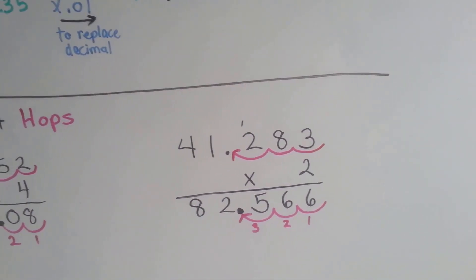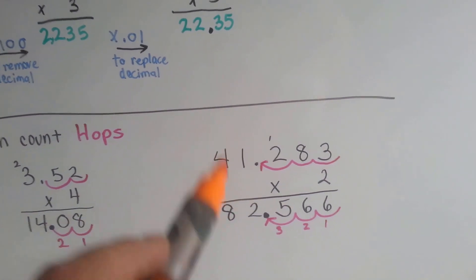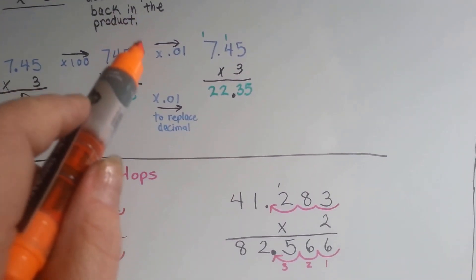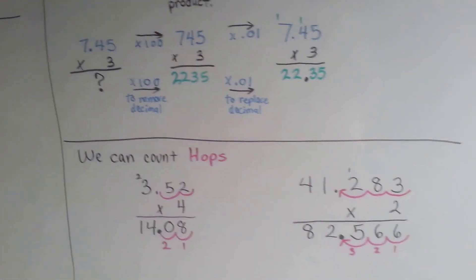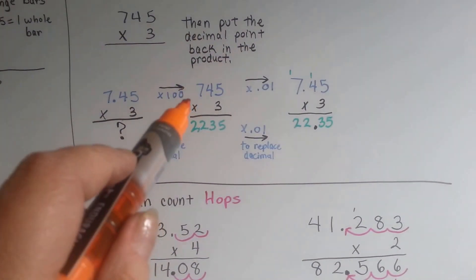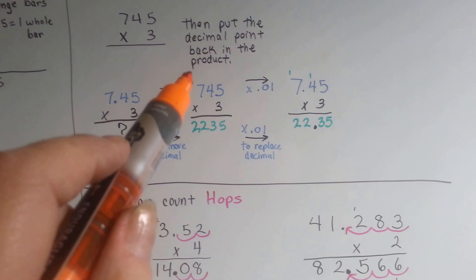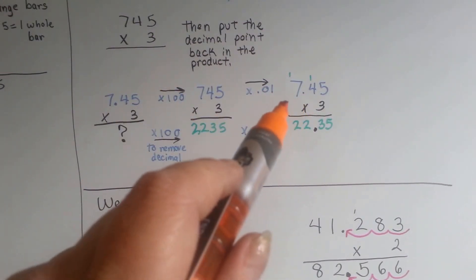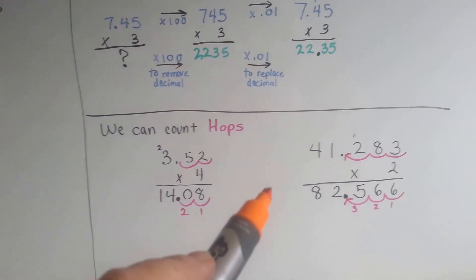And actually, this is the method I use, but what I'm basically doing is this one. I'm actually doing this one, but in a shortcut way. If you do it this way, then you're totally understanding what you're doing with the place values and how the value is moving.